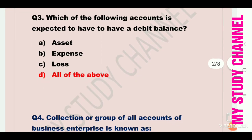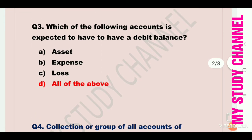Next question number 3: which of the following accounts is expected to have a debit balance? Option A is asset, B is expense, C is loss. The answer is all of the above. Asset, expense, and loss accounts are expected to have a debit balance.